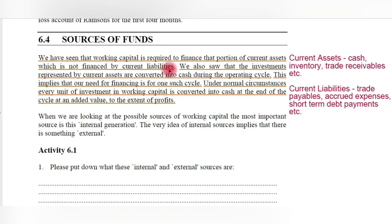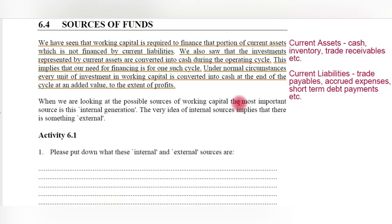Working capital is required to finance that portion of current assets which is not financed by current liabilities. Working capital means the difference between current assets and current liabilities. Examples of current assets are cash, cash equivalents, inventory, and trade receivables. Examples of current liabilities are trade payables — purchases made on credit where payment is not yet made — accrued or accumulated expenses, and short-term debt payments.